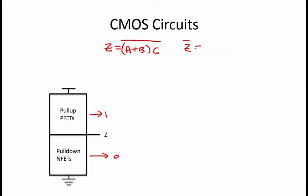If Z equals NOT of A or B and C, then NOT Z equals A or B and C. To draw the pull-down portion of this circuit, we look at when the function produces Z equal to zero. This occurs when A or B and C equals 1. So the pull-down circuitry should be on when A or B and C equals 1, meaning A or B equals 1 and C equals 1.